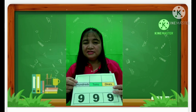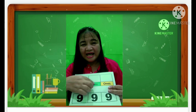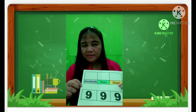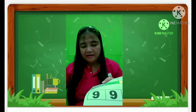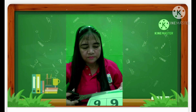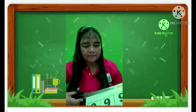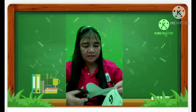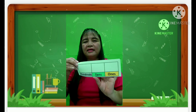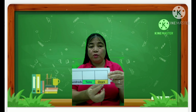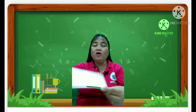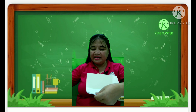We are going to cut the place value labels: hundreds, tens, and ones. We have an arrow at the bottom — start cutting it from the bottom. There it is. We have here the place value hundreds, tens, and ones. We are going to clip this on our folder, like this.